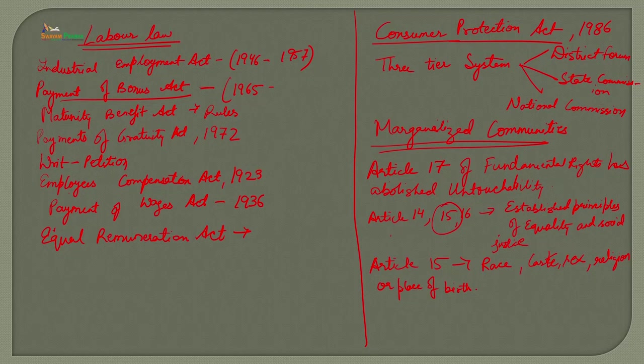Legal awareness plays a crucial role in promoting social justice for marginalized communities. Article 17 of the fundamental rights has abolished untouchability. Articles 14, 15, and 16 establish principles of equality — Article 15 specifically addresses discrimination on grounds of race, caste, sex, religion, or place of birth. You should become your own savior — legal awareness is very important and these rules are there for marginalized communities as well.